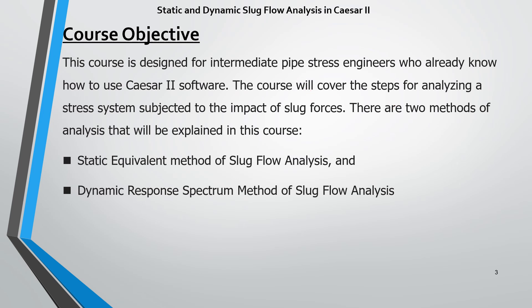This course will cover the steps for analyzing a stress system subjected to the impact of slug forces. When a slug force is confirmed by the process team in a system, these are the steps required while performing your stress analysis. As already mentioned, there are two methods of analysis explained in this course. The first is the static equivalent method of slug flow analysis. In general, slug forces are dynamic, so static method is not preferred to analyze the system. However, considering a dynamic load factor of around 2 — meaning we double the calculated force — and then incorporating those forces in static analysis, that is why it is called the static equivalent method.